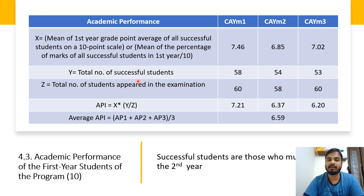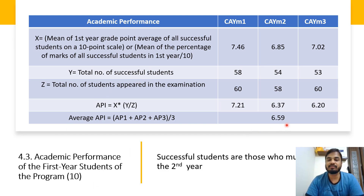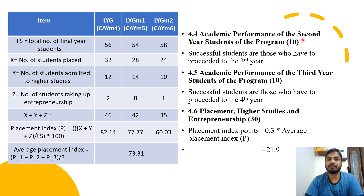An important clause here is how to define a successful student. For first year academic performance, successful students are those eligible to enter second year. For second year academic performance, successful students are those who proceed to third year. For third year, it is those who proceed to the final year. With an average API of 6.59 out of 10, that becomes the score for the 10-mark allocation. Sections 4.3, 4.4, and 4.5 combined carry 30 marks.